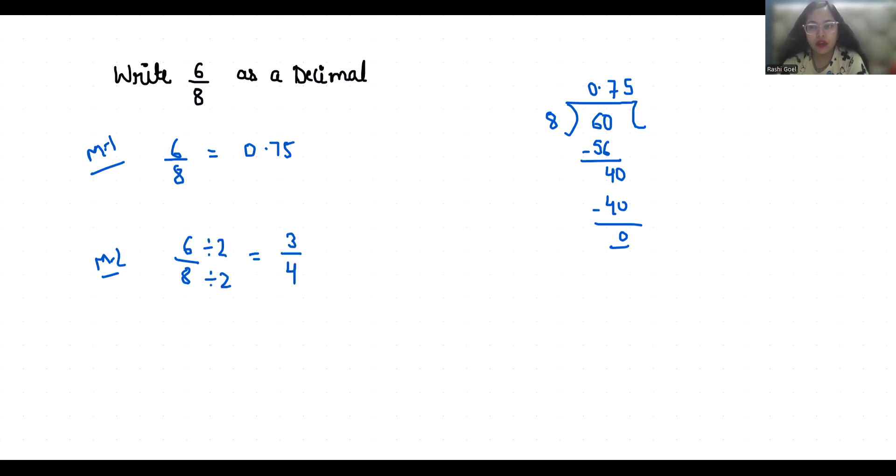Now I am going to convert our denominator in terms of 10, 100, or 1000. So in the table of 4, 10 does not count. So we will go with 100. Yes, 100 comes at the 25th place.